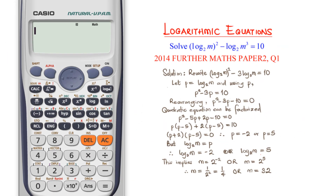Now look at this question — it's different from what we've been solving. It's a theory paper from WAEC 2014. We are given that log to base 2 of m, all raised to power 2, minus log to base 2 of m raised to power 3, equals 10, and we have to solve for m. The uniqueness here is that we are expecting two answers. Let's see how the calculator handles that.